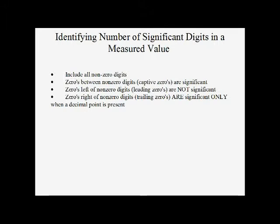Zeros to the left of non-zero digits are not significant. The reason that we ever see zeros on the left side of a number is if there's a decimal point there. So to have zeros left of the non-zero digits means that there's a decimal point there — those zeros are just telling us where the decimal point belongs.